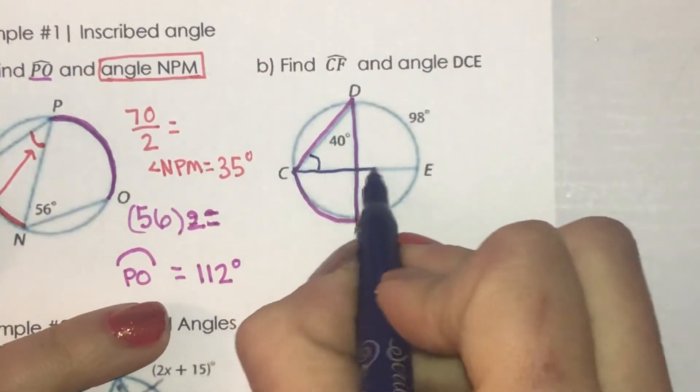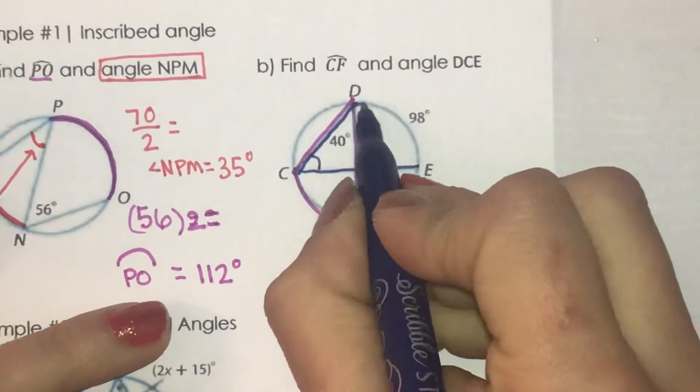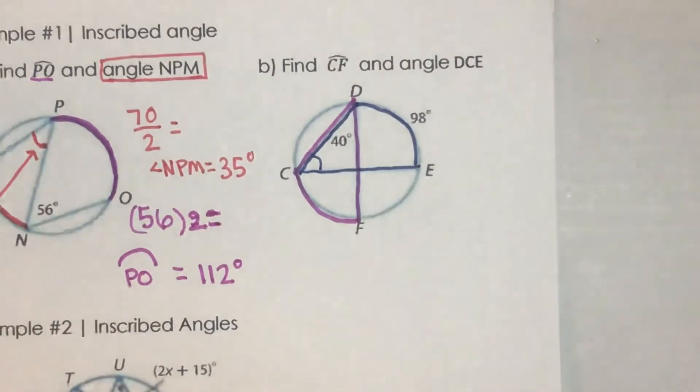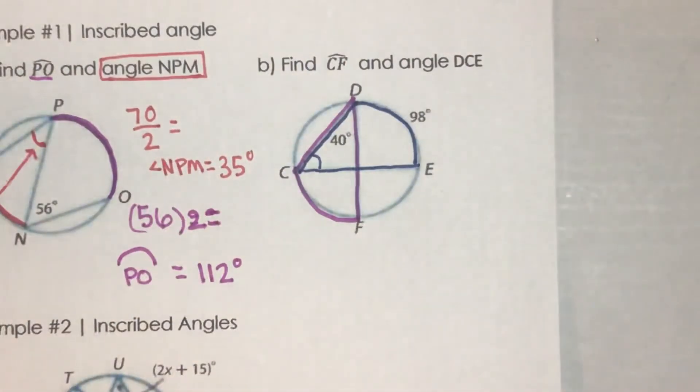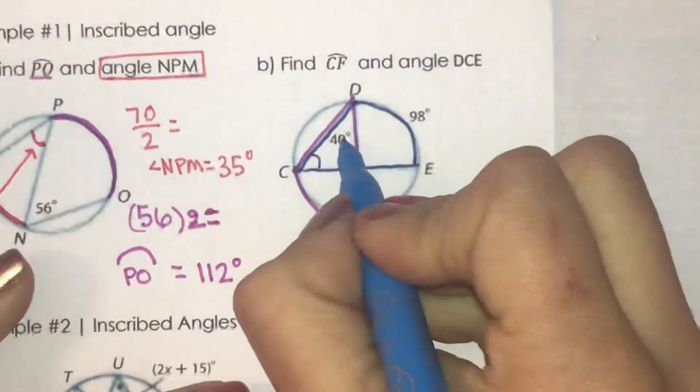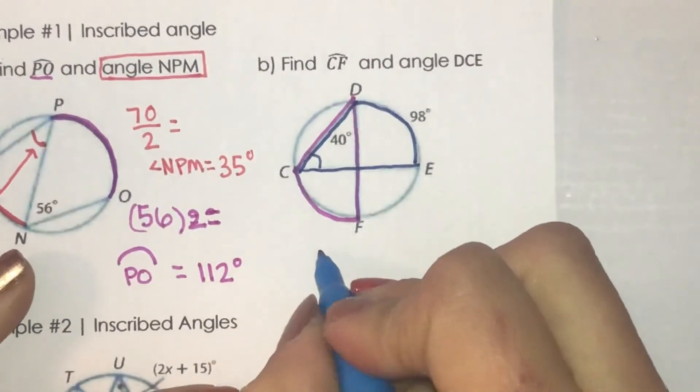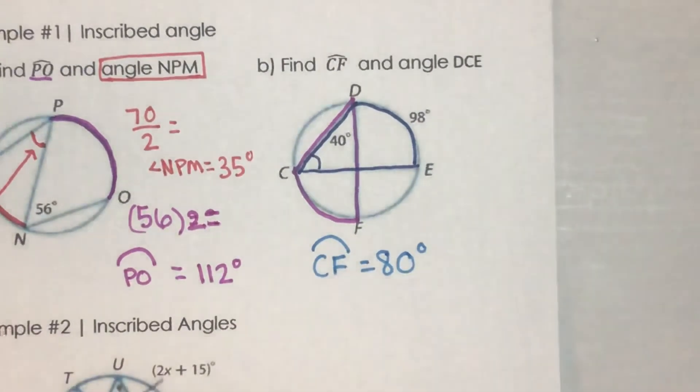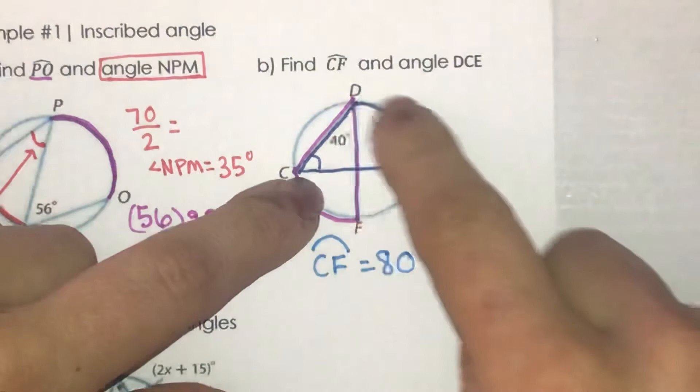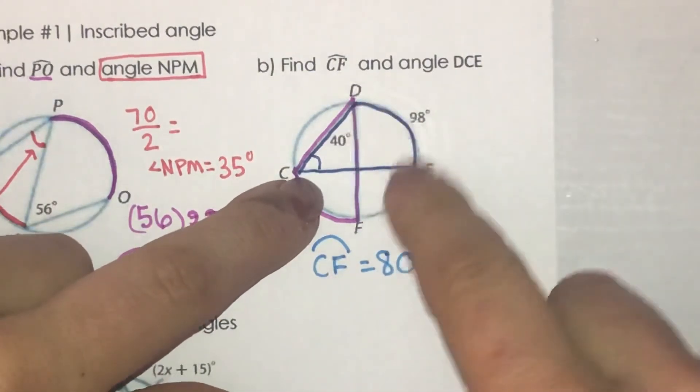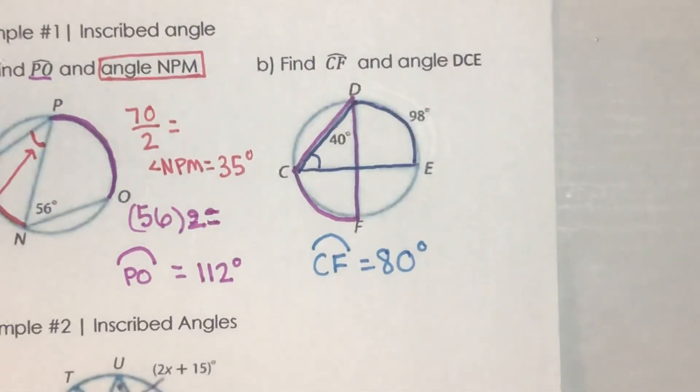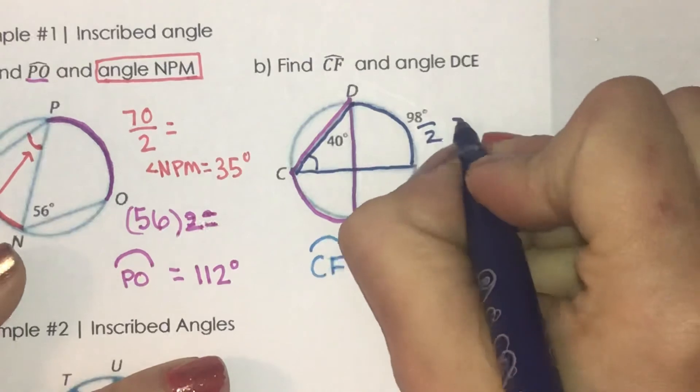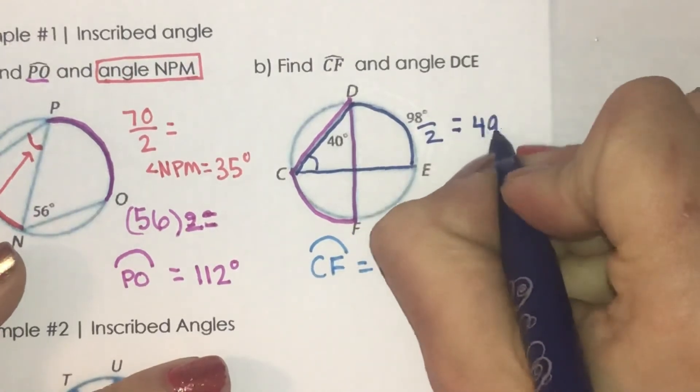Okay, so what I'm going to do is take this angle measure and multiply it by 2 to get my arc CF. And then how I'm going to find this angle here, I'm going to take the arc of DE and divide 98 by 2. So angle DCE equals 49 degrees.